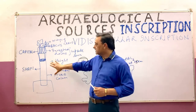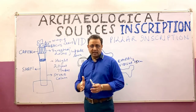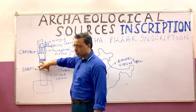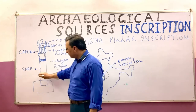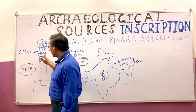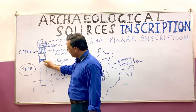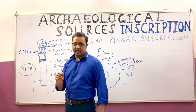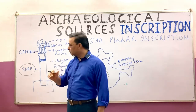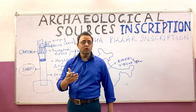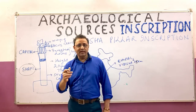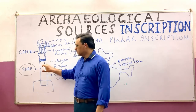Now let us understand the structure of the pillar. The pillar is in cylindrical form, and this cylindrical body is known as the shaft. The inscription — the engraving — is done on this shaft. It is written on this pillar in dedication to Lord Vishnu, also known as Lord Vasudev.